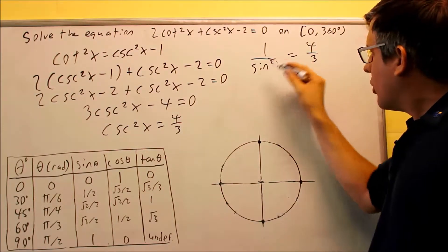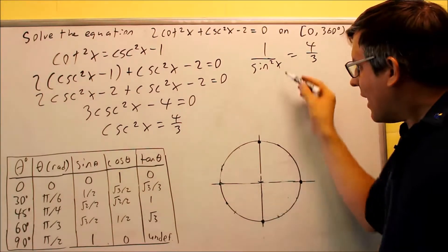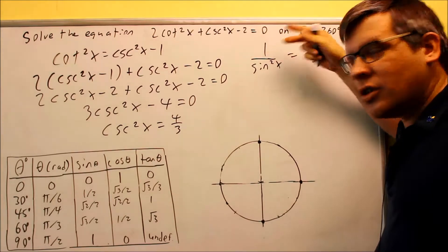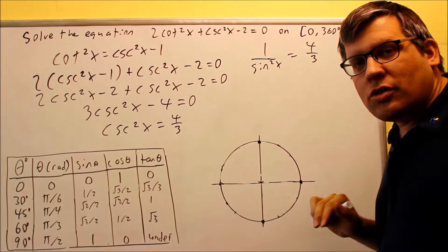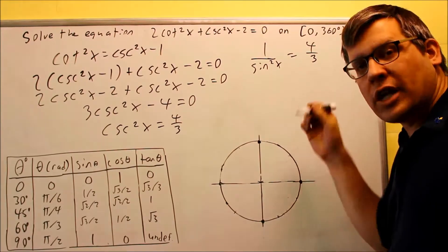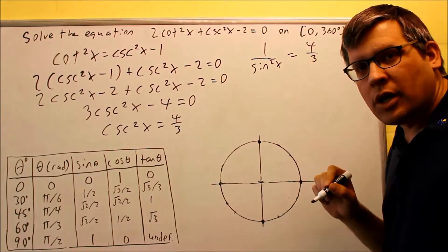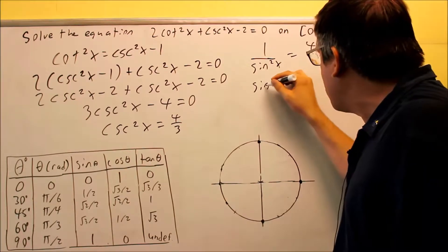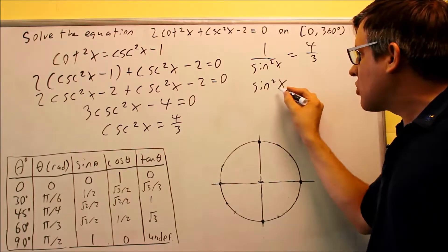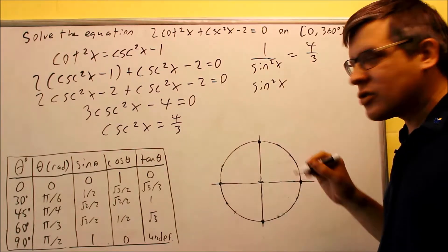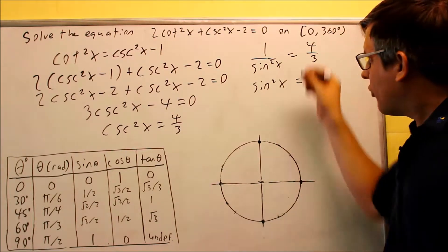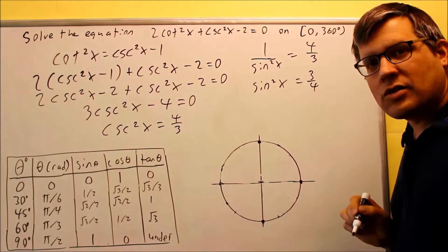Now, I want to solve for sine squared. I can do that because with the way fractions work if I flip the first fraction and I flip the second fraction they should still be equal to each other. I am allowed to do that. I could also cross multiply but instead I'm just going to flip each fraction. When you do one side you have to do the other side as well.